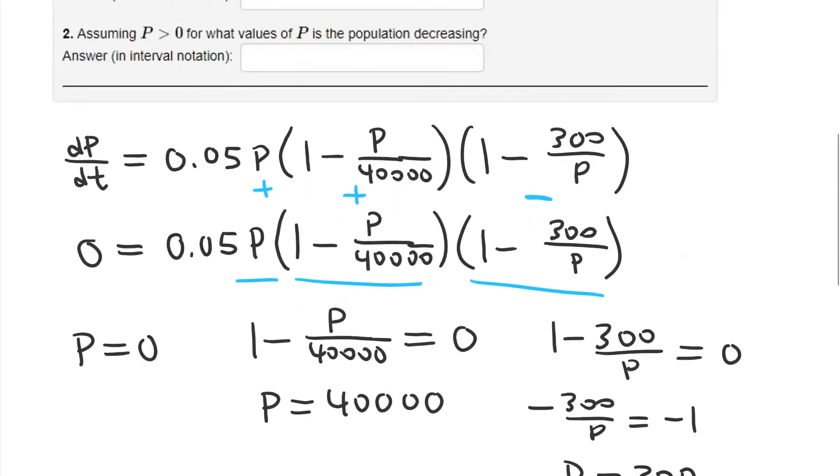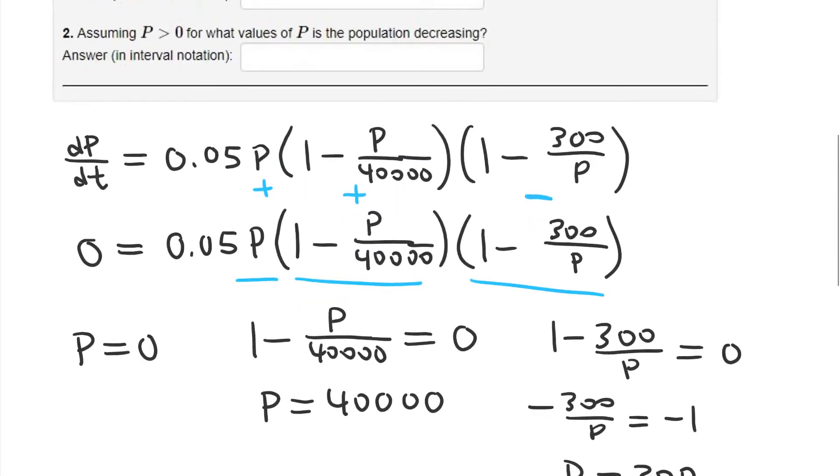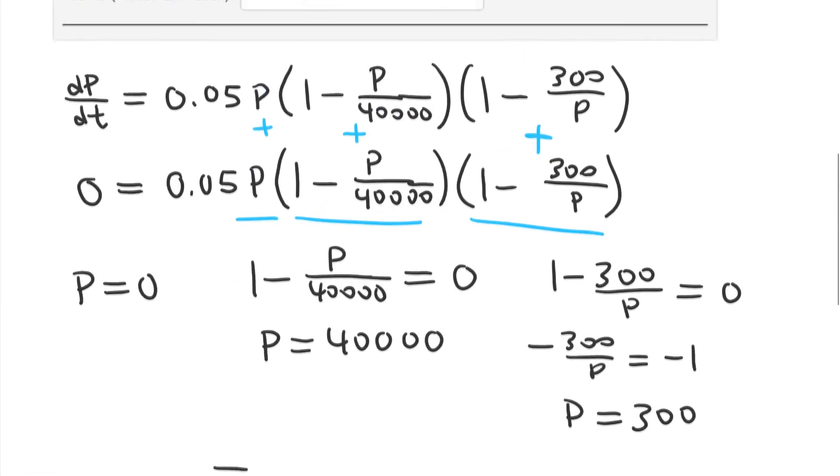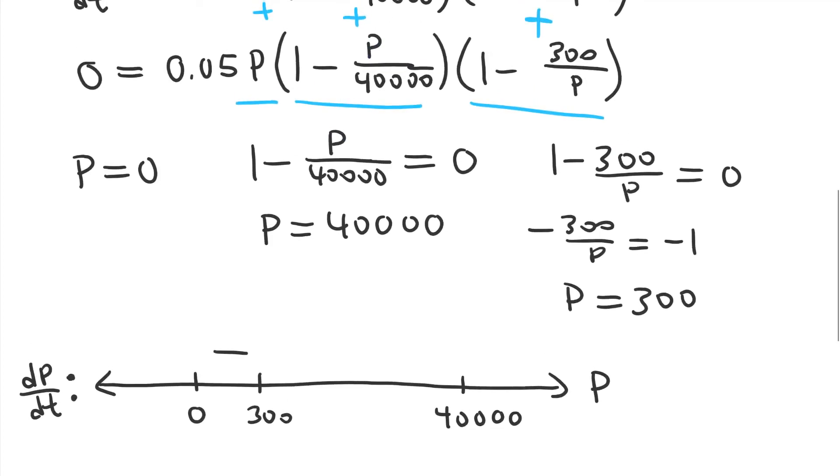Between 300 and 40,000, well, again, this fraction will still give us a number less than 1. So this will still be positive. 300 divided by P is going to give us a number less than 1 as well. So in this case, this is going to turn positive. And so the whole product, positive times positive times positive, will give us a positive here.